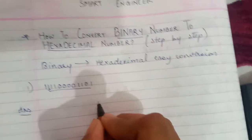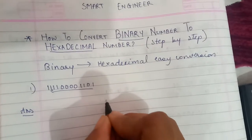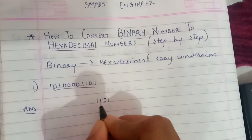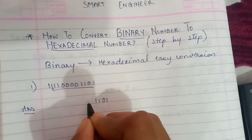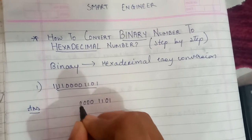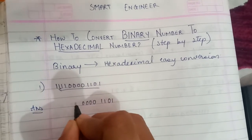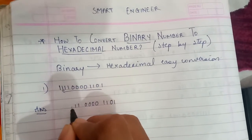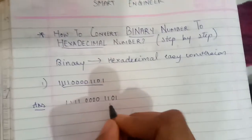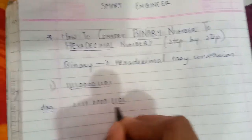So the first group going right to left is 1 0 1 1. The next group of 4 is 0 0 0 0, and then the last group is 1 1 1 1.